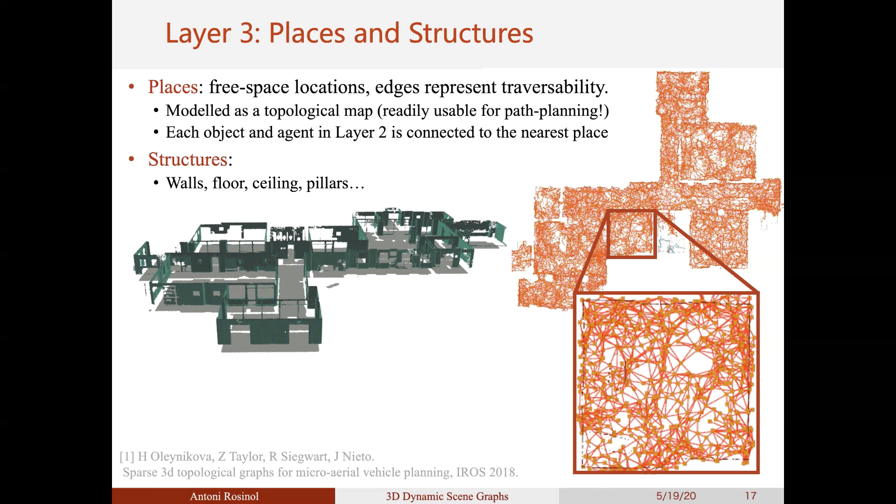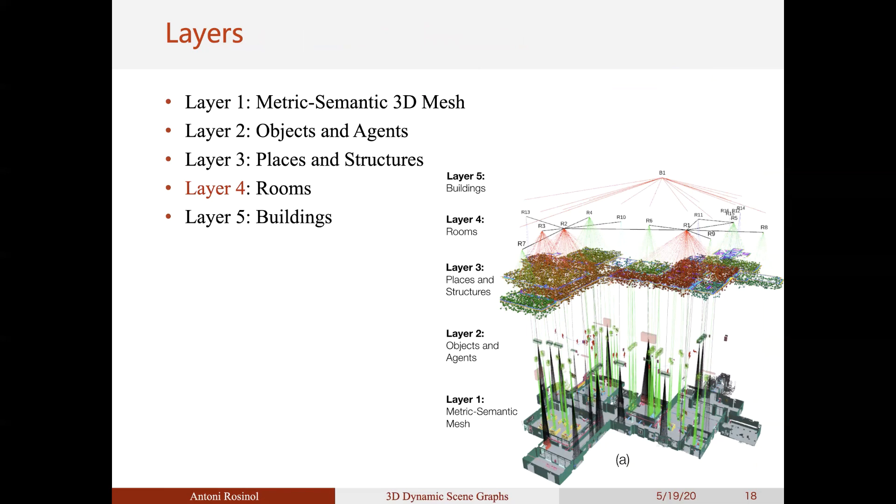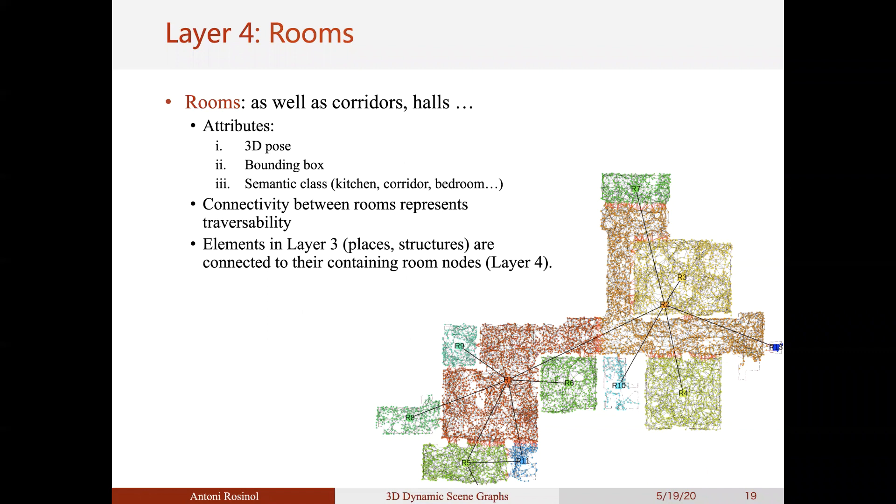Then, in layer 4, we extract the room layout of the scene. We encode the rooms with a 3D pose, a bounding box, and a semantic label. Connectivity in the graph represents traversability from one room to the other, meaning there is a door connecting both. We do not need to explicitly detect doors, since the topological graph provides us with sufficient information to infer the way rooms can be traversed, as we will see next. All elements in layer 3 have an edge to nodes in layer 2 if they are in the corresponding room.